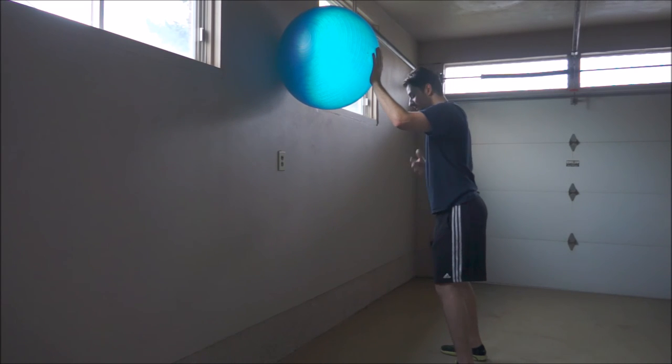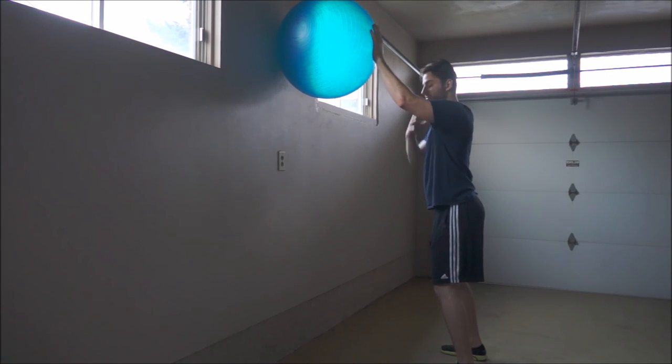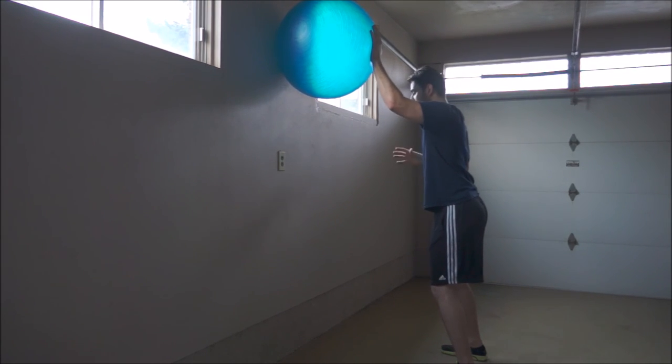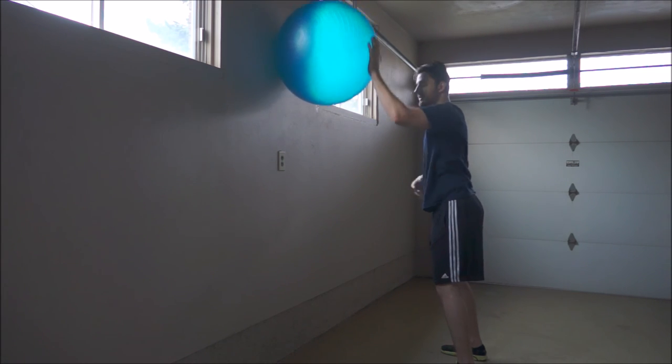This is also a great exercise for rotary stability because we're integrating the whole arm and shoulder with our core, preventing any rotation of our spine. We've got to force our core, abs, shoulder - everything to stabilize while pushing the ball and getting that elevation.